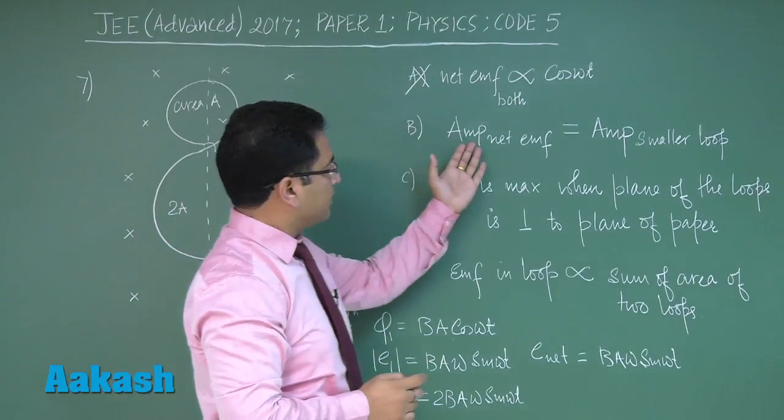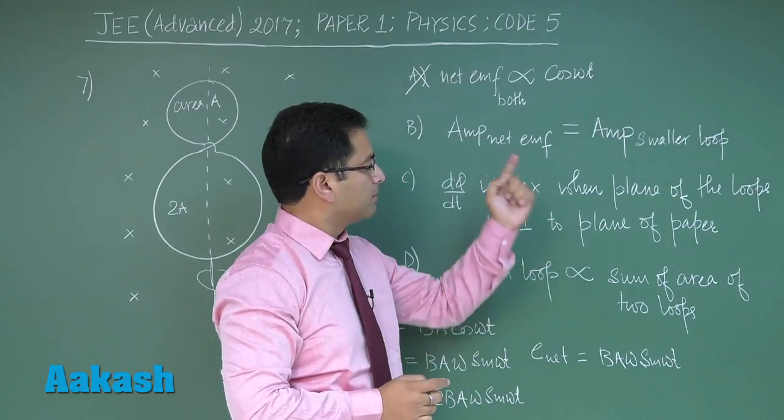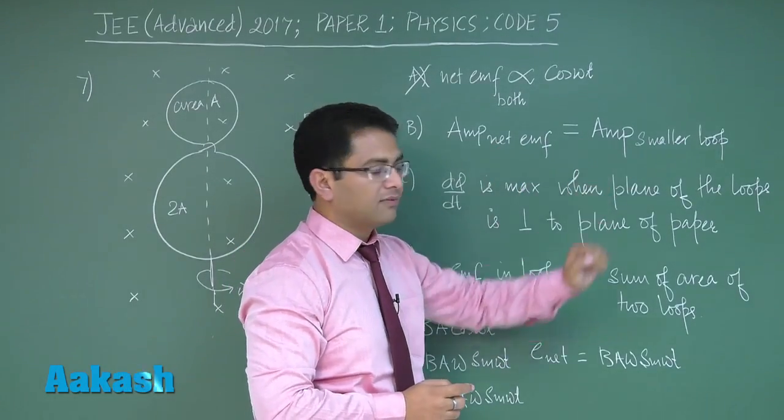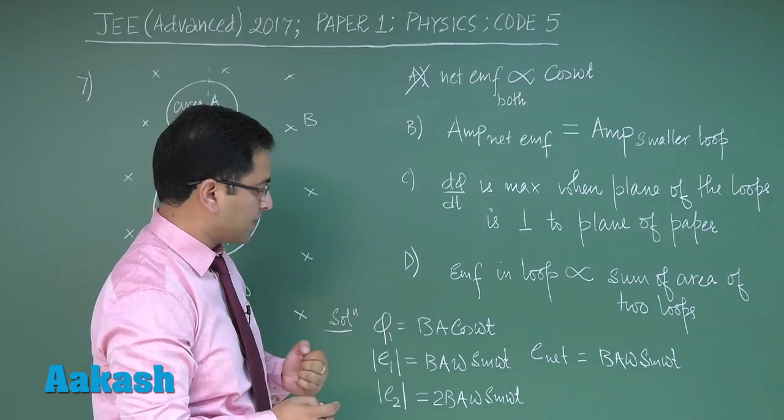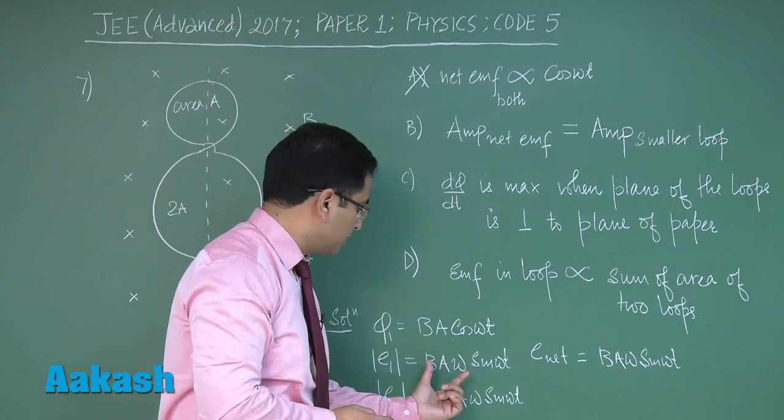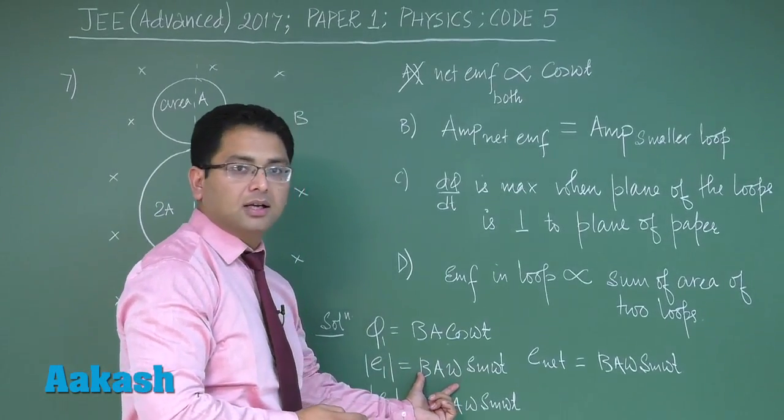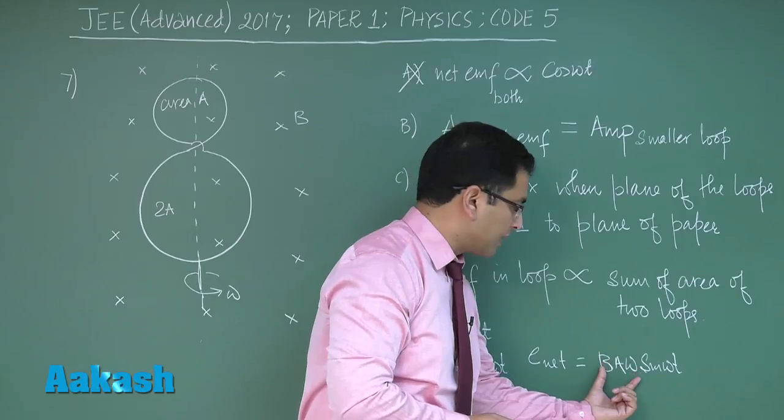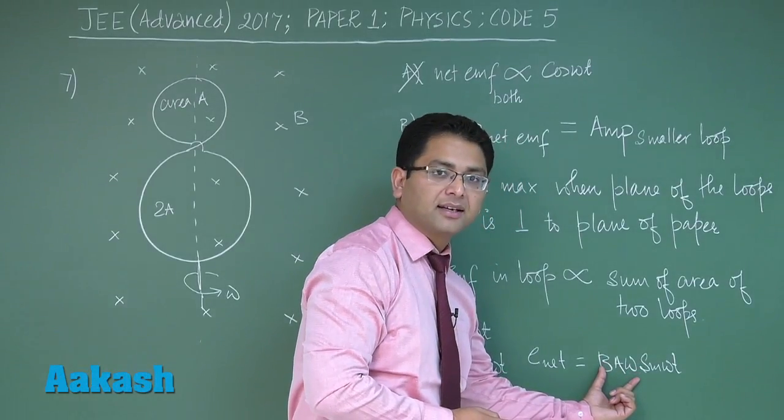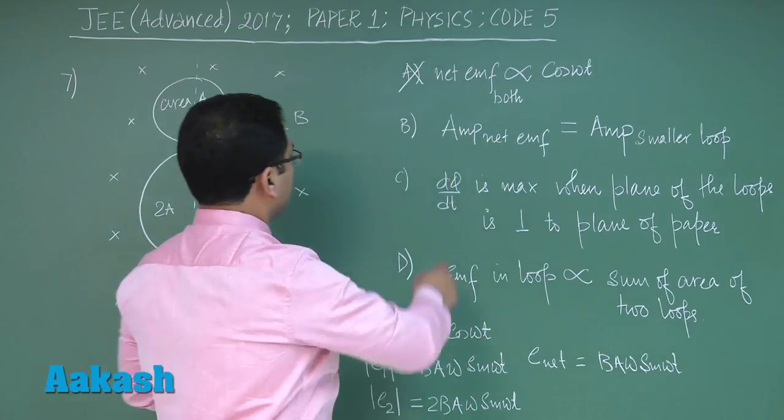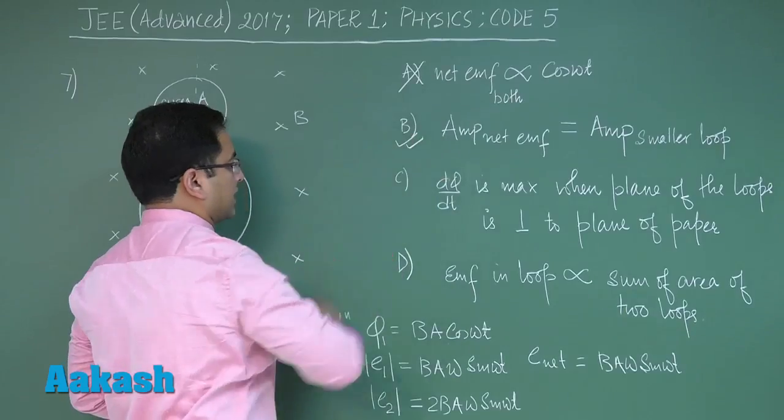B: amplitude of the net EMF would be amplitude of the EMF on smaller loop - this seems to be correct. For the smaller loop, amplitude is B A omega, and net EMF's amplitude is also B A omega. So option B would be the correct option.